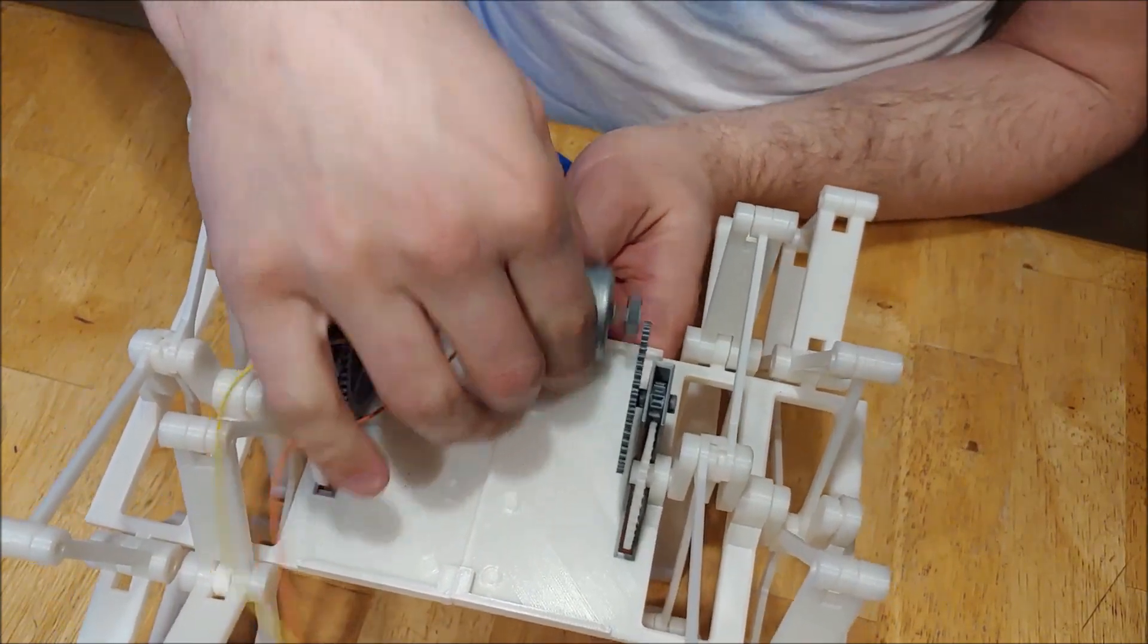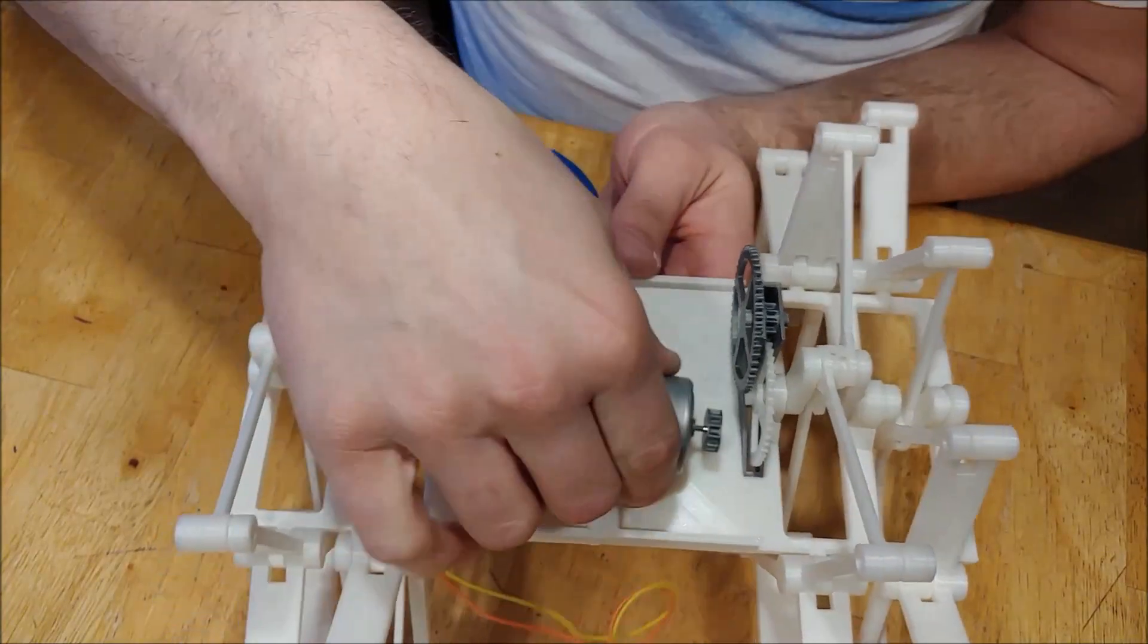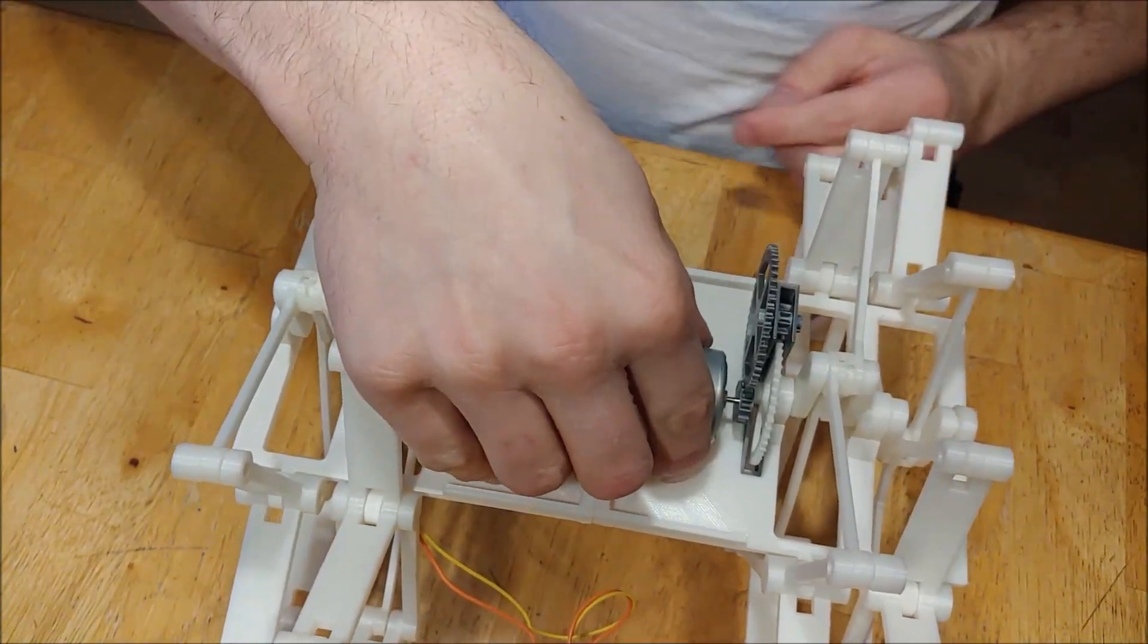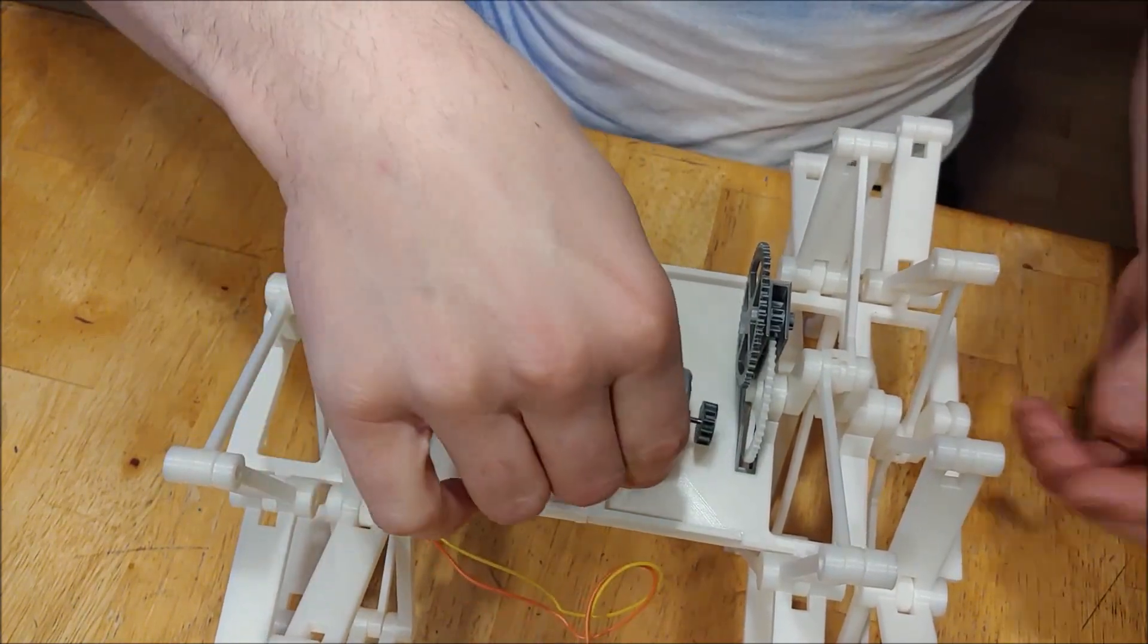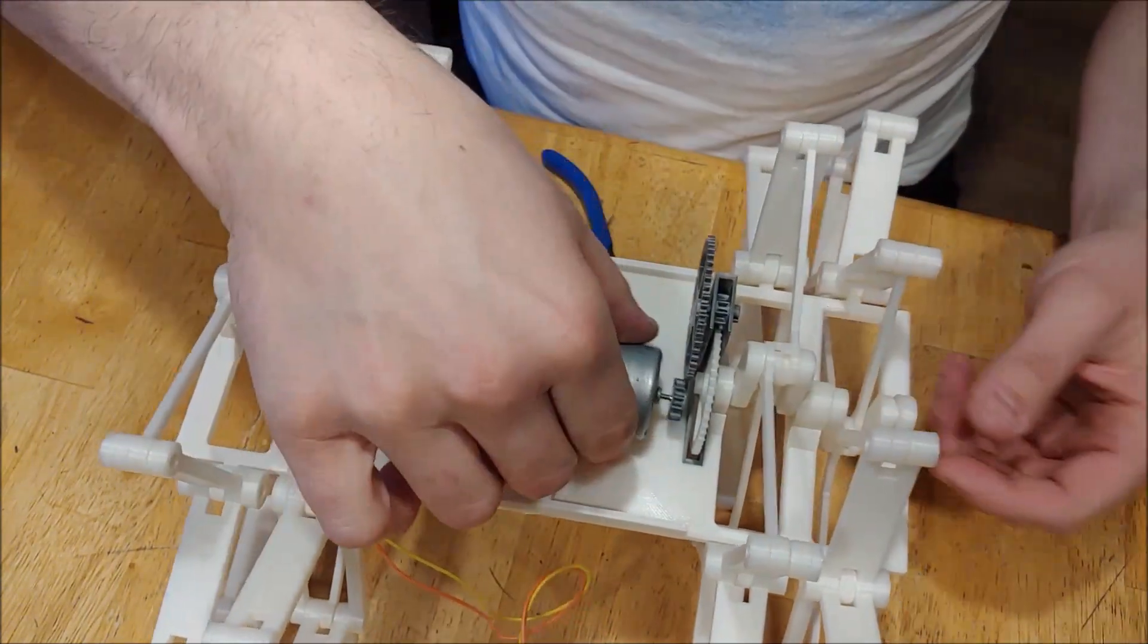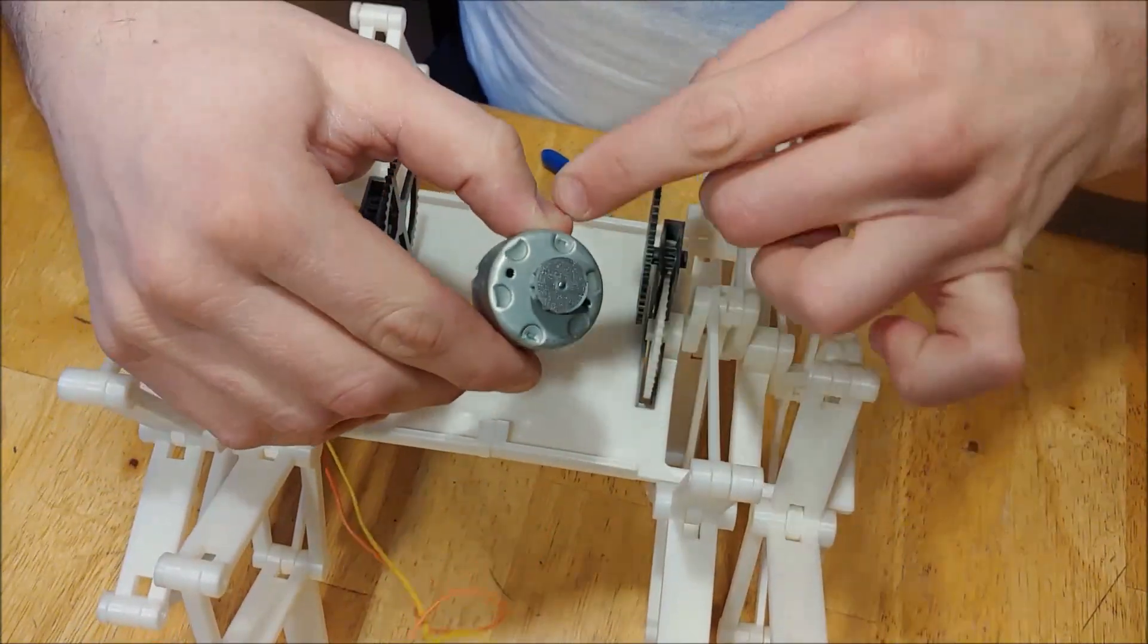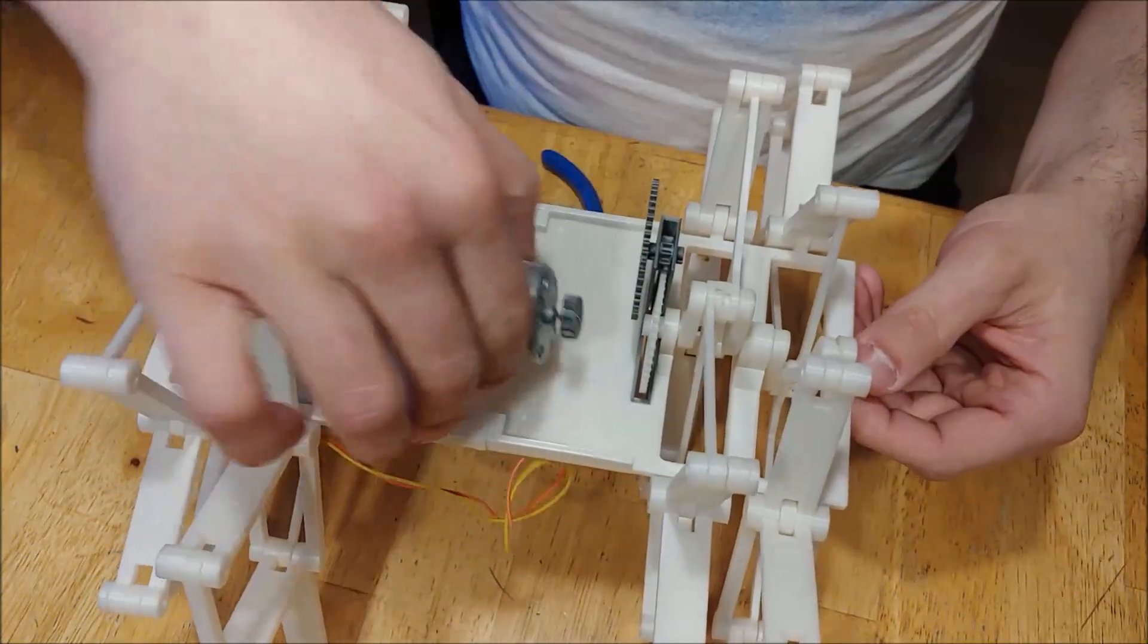Now it just so happens that it fits really, really nicely here, but you can go on either side and then you have a couple of options. You can either glue it down, which is the easiest one, or you can 3D print your own bracket for your motor that will fit in here.